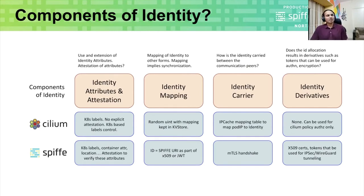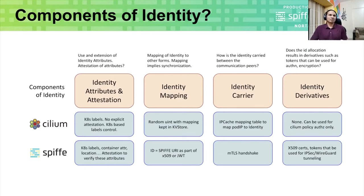Then there is identity mapping. Cilium maps the identity to a random unsigned integer and this mapping is kept as part of KVStore, which implies there is a synchronization concern. In case of SPIFFE, the SPIFFE ID is essentially a SPIFFE URI, which is part of X.509 certificates or JWT tokens. Because of this attestation logic, SPIFFE has a separate control plane involved. In case of Cilium, there is no separate control plane — the Kubernetes control plane itself serves as the control plane for Cilium identity.